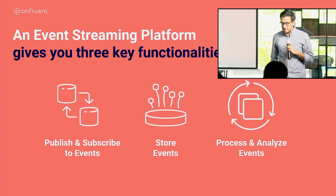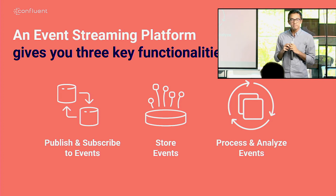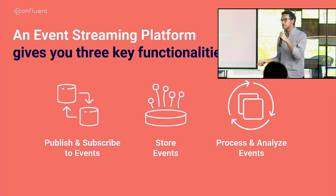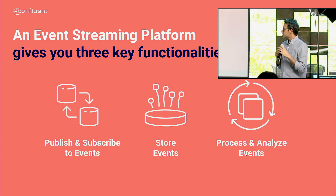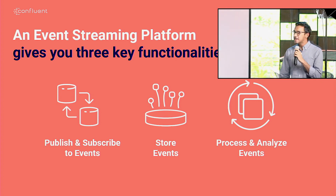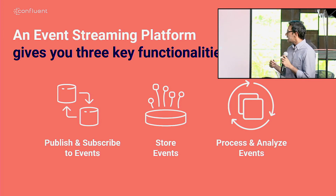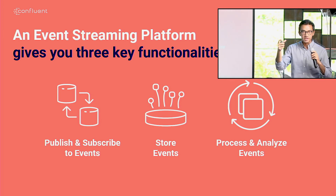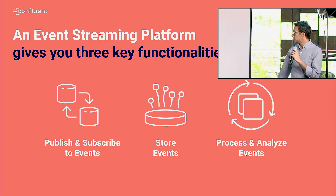Now let's look at the how — the capabilities of what an event streaming platform lets you do. The first thing is publish and subscribe to events. But the other two things are pretty important. The first is storing events: Kafka actually stores these messages. They're written to disk, and that's a key differentiating factor for using Kafka as opposed to other messaging products. And then we'll look at processing in much more detail.